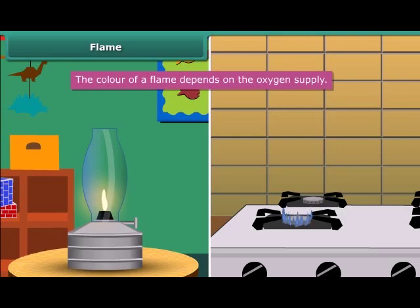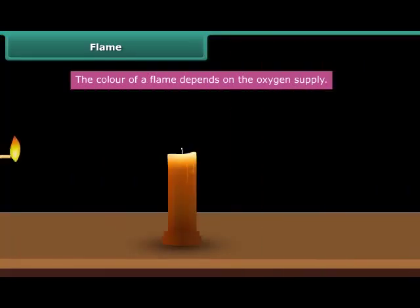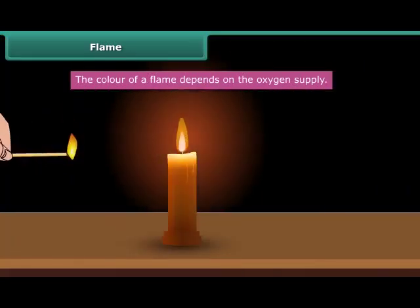Do you know how these flames are obtained? When we burn the candle with a matchstick, the heat of the matchstick melts and vaporizes the wax, which rises through the wick and forms the flame.